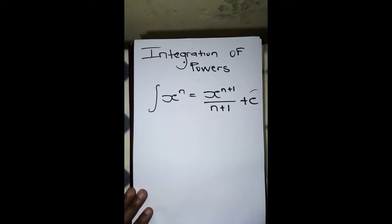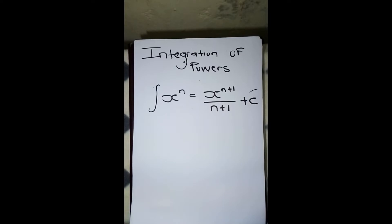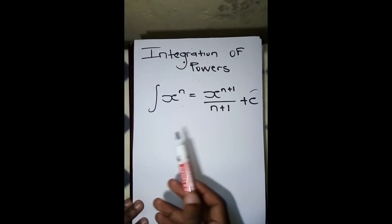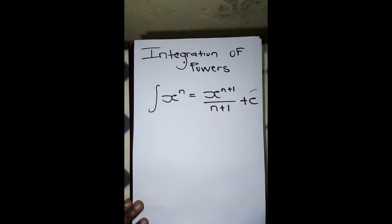...all plus C. This plus C is included because we are dealing with indefinite integrals. Indefinite integrals are a family of functions — we are not really sure where the function is in terms of the vertical shift, so we include C. This is the formula for integrating a term to the power n, whether it's x to the power n, one over something, and so on.